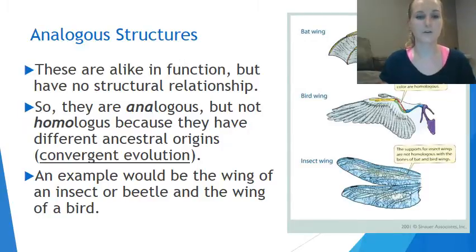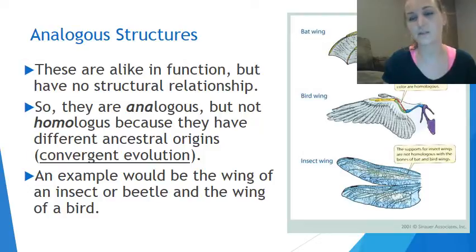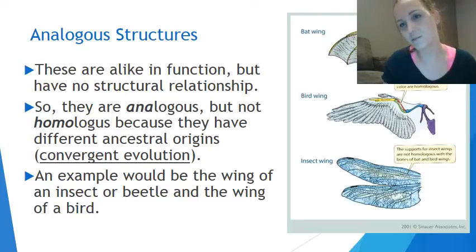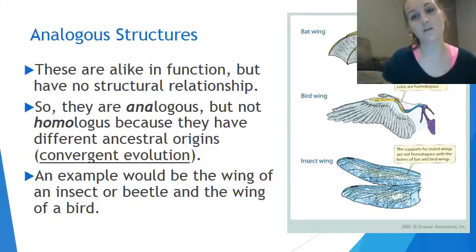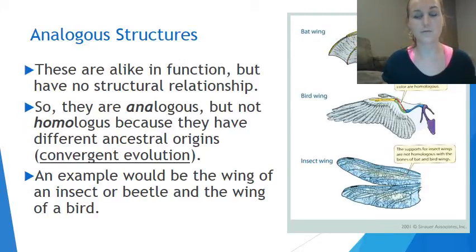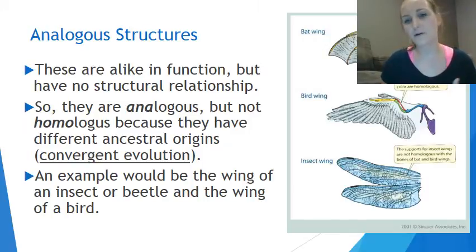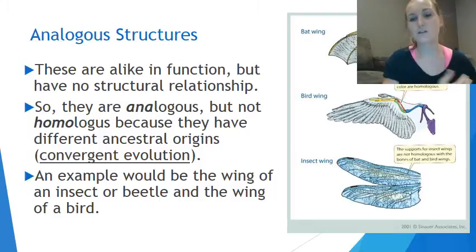Due to potentially similar environments, analogous structures have developed similarly in function but have a different structure. Looking at this picture, you can see the bird wing and bat wing with color-coded bones showing how they are similar. The insect wing is also similar in function — helping the insect fly — however, insect wings are not homologous to bird and bat wings because insect wings don't have bones, making them very different structurally.